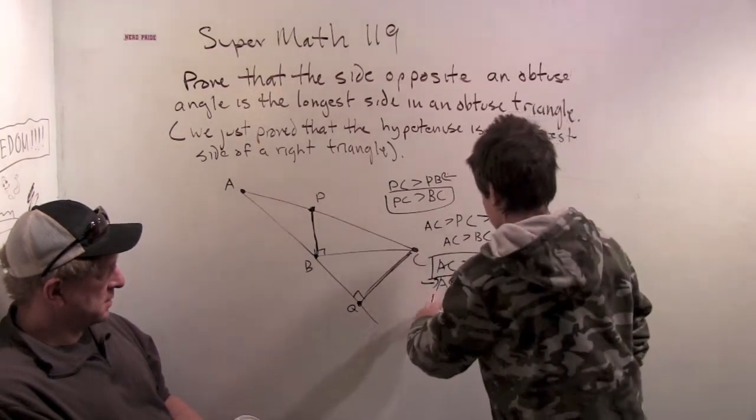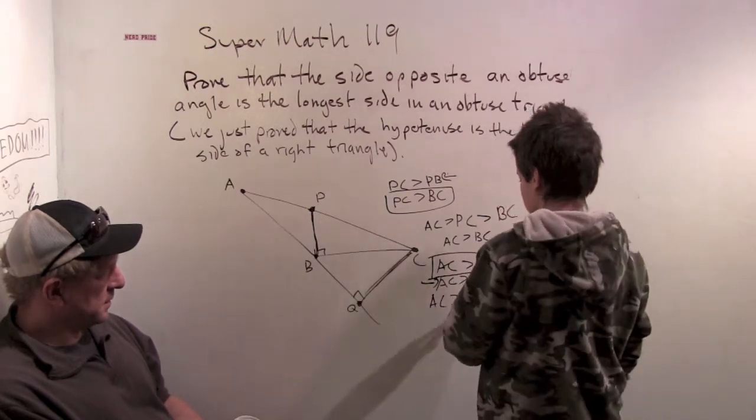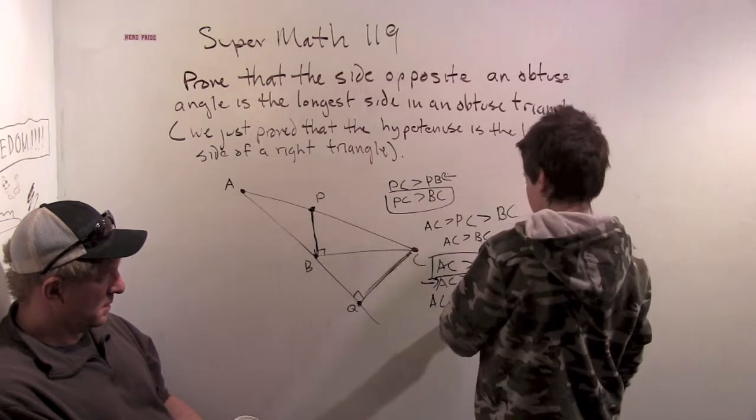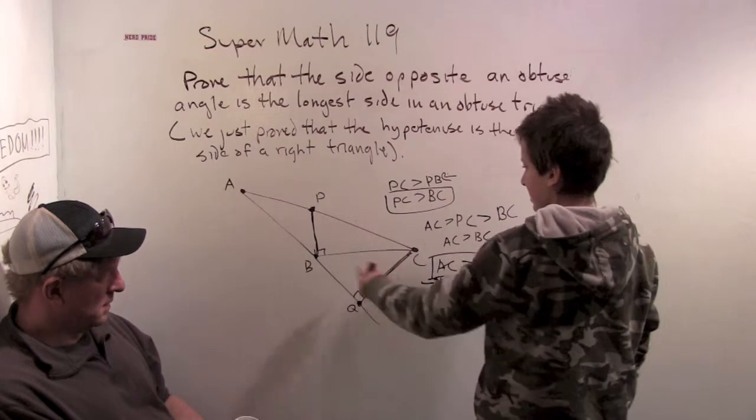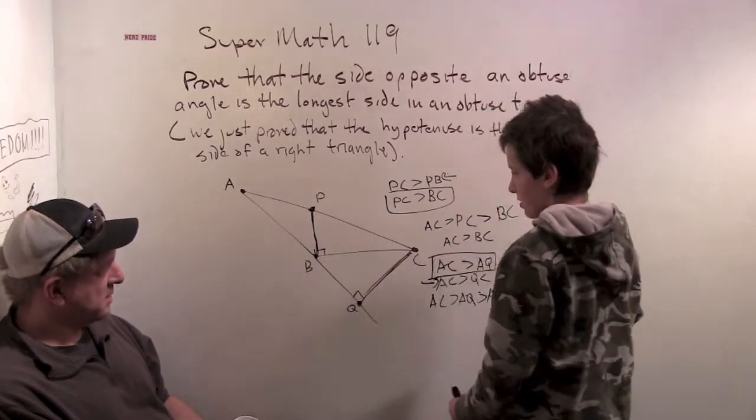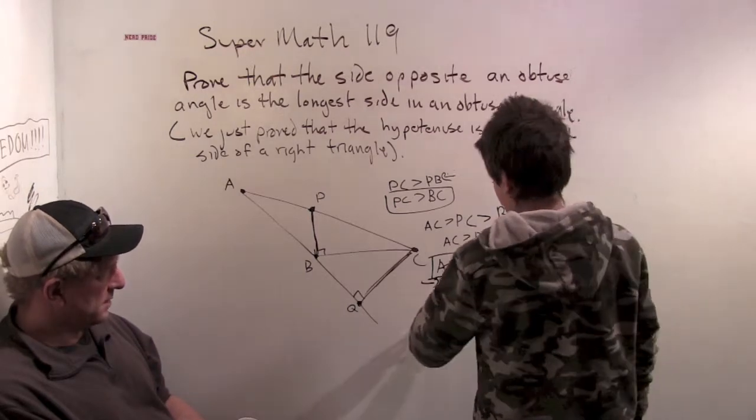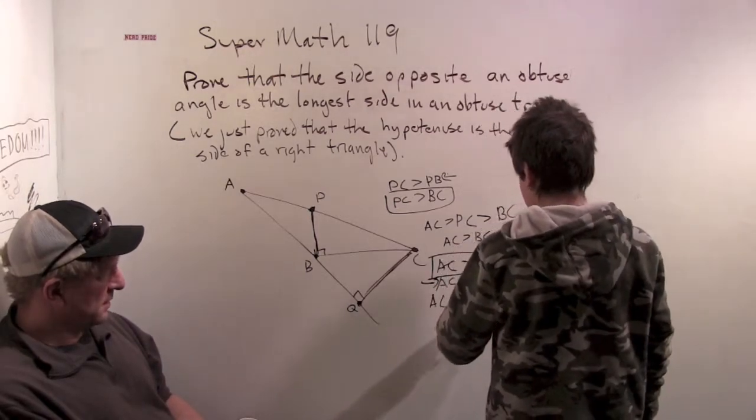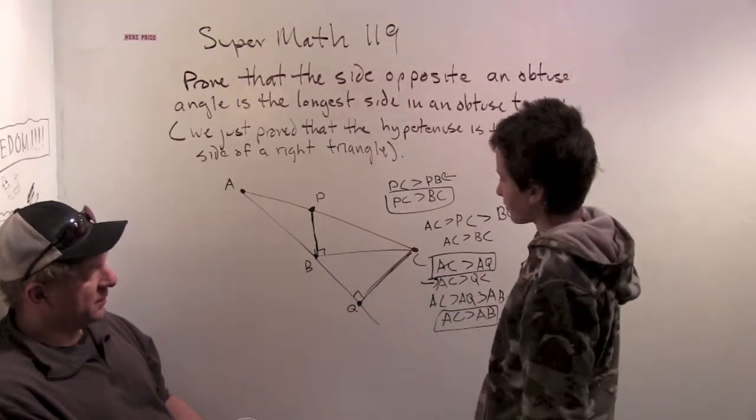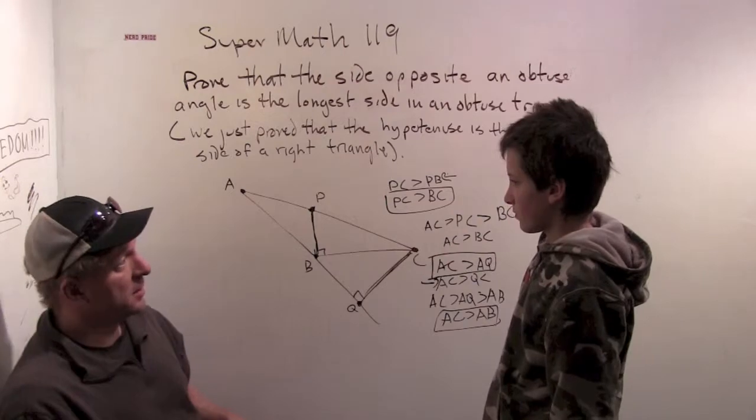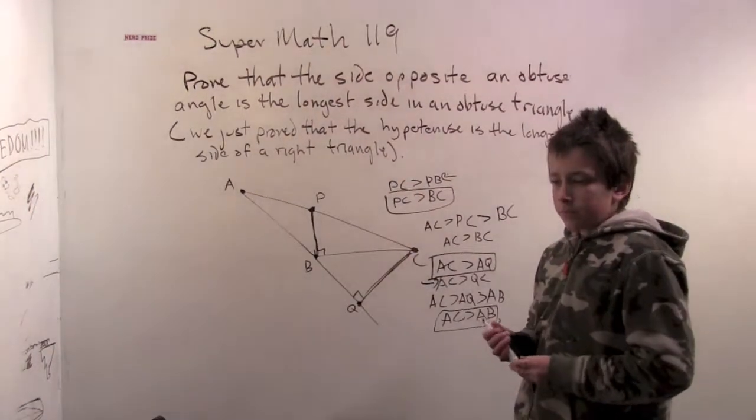So AC greater than AQ means, well AC greater than AQ, and AQ is greater than AB because we extended this. Okay. Interesting. So AC is greater than AB. Okay, super. Alright, I just got a couple questions for you. So let's make this part B. Okay, alright.